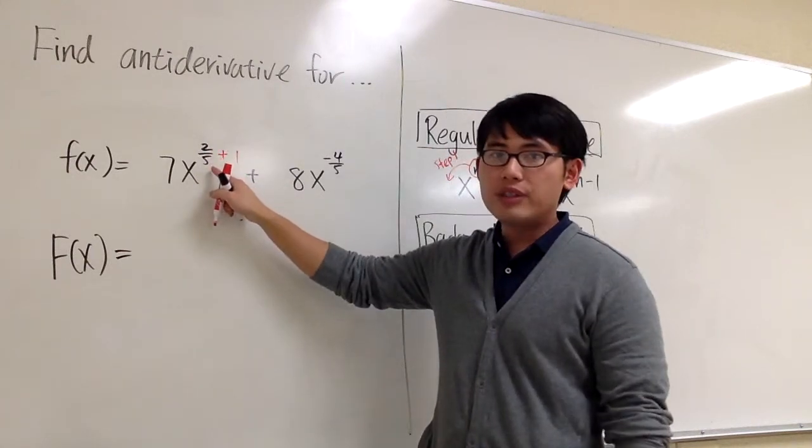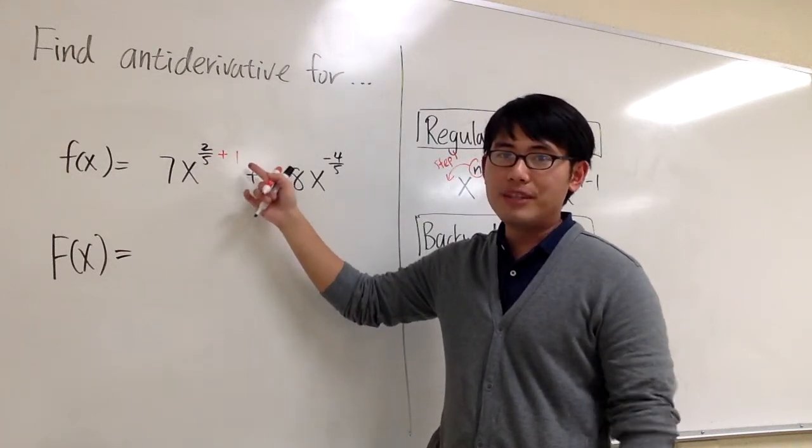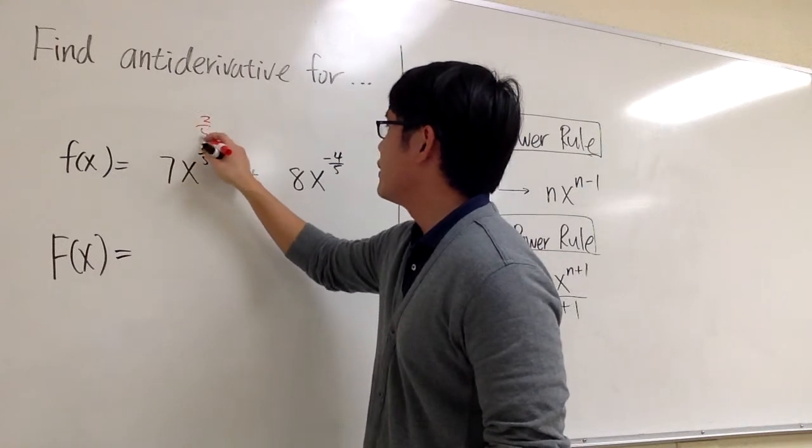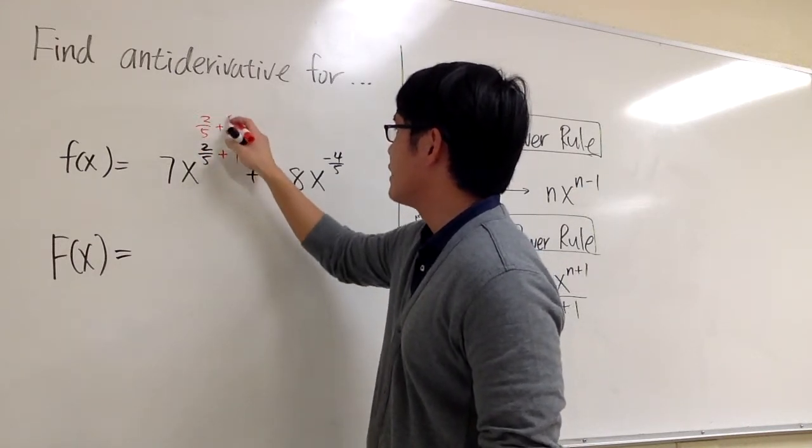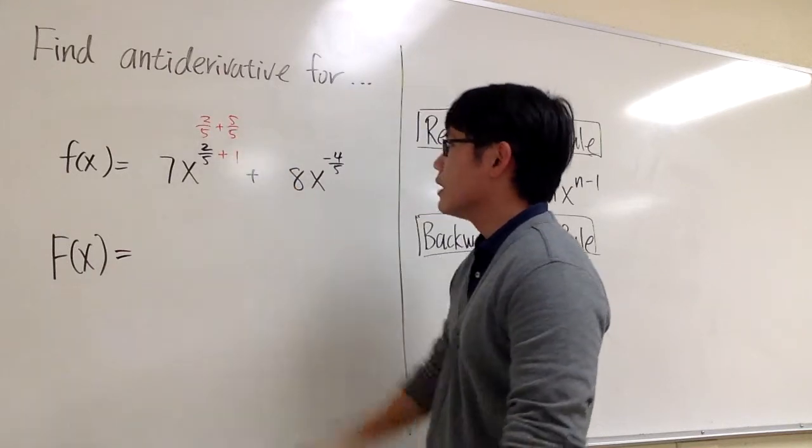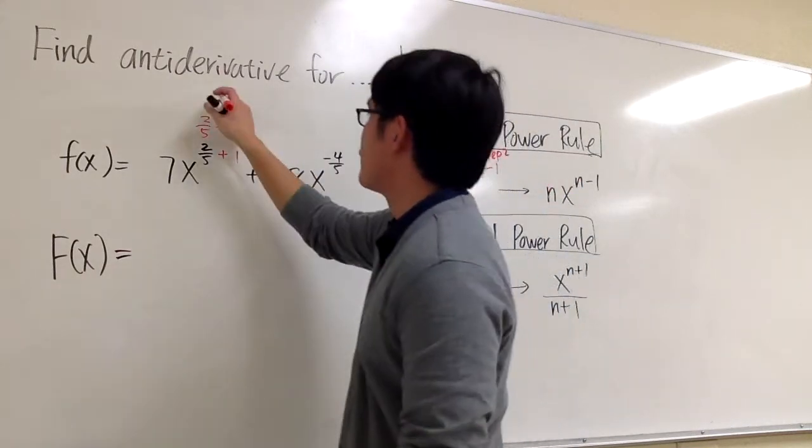But then 2/5 is a fraction plus 1. I have to get the common denominator. So this is the same as saying 2/5 plus the common denominator would be 5, so this is 5 over 5. 2/5 plus 5 over 5, of course, would be 7 over 5.